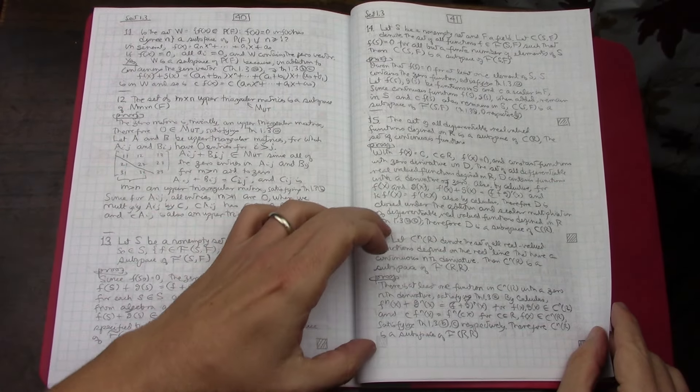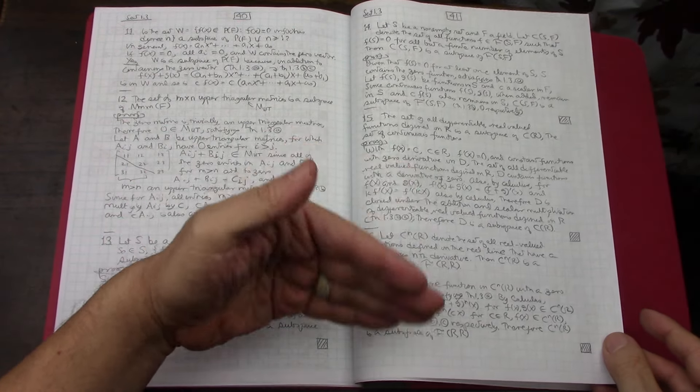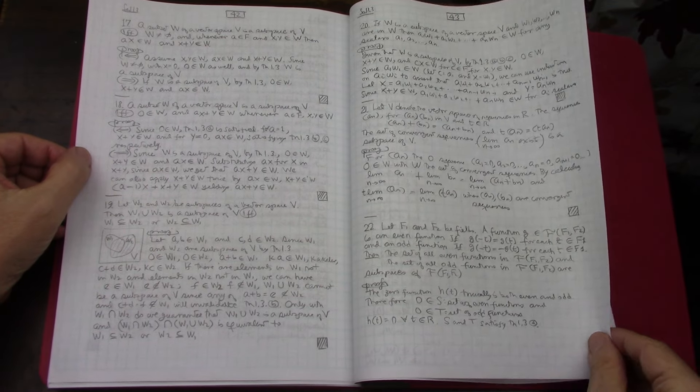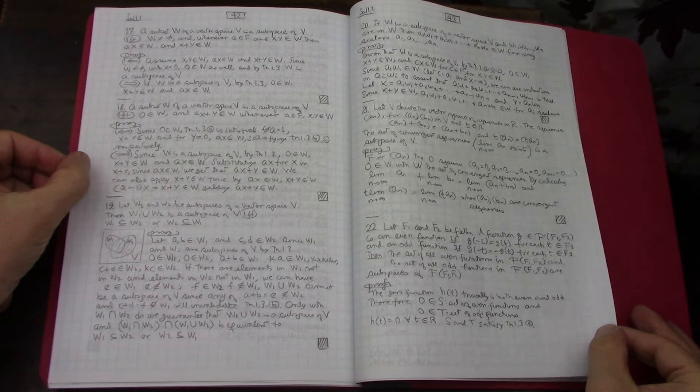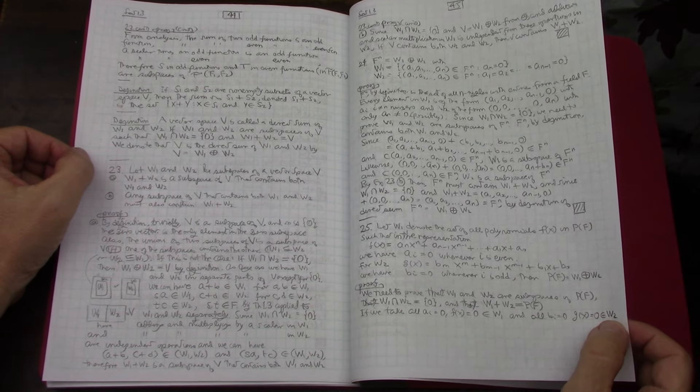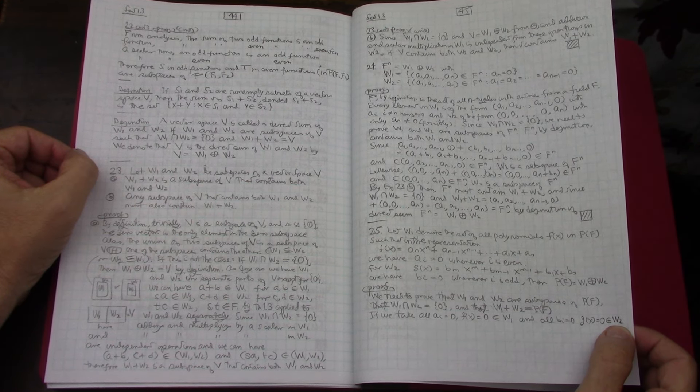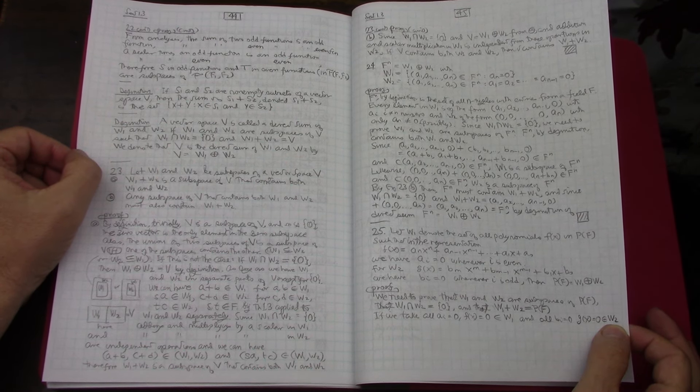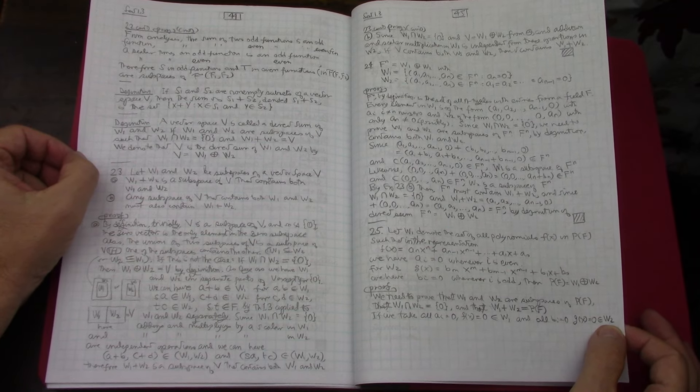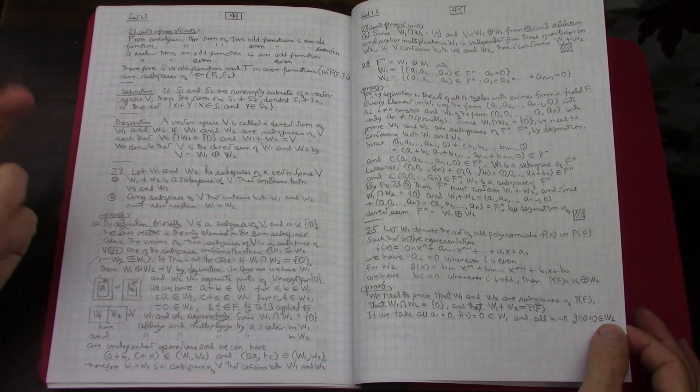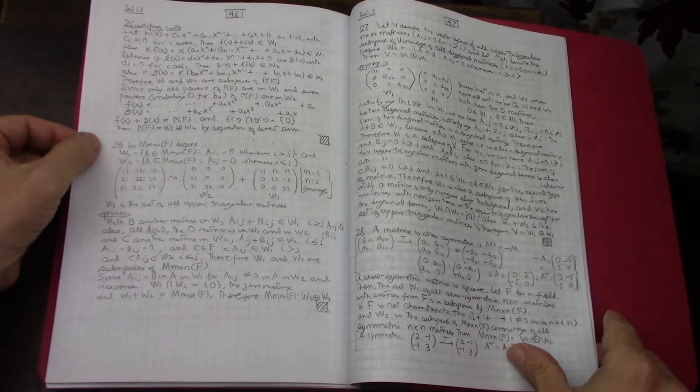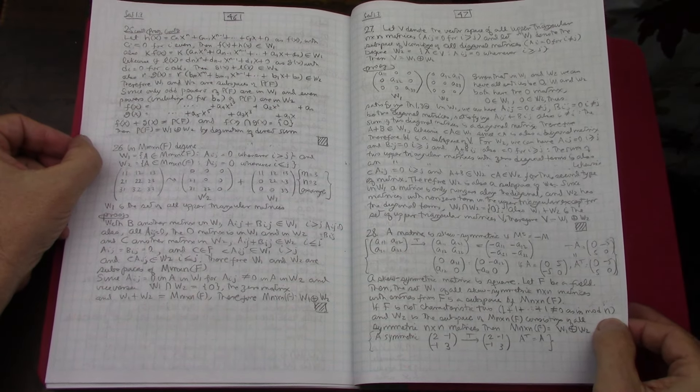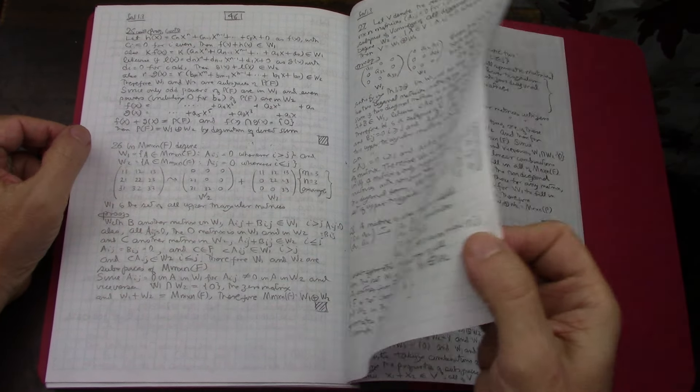Proofs are not that lengthy for all these problems. They all work on the same principles. Everything about subspaces, so you got to find the closure for scalar multiplication and addition of vectors, and then you got to have the zero vector. You got those three, you got a subspace.